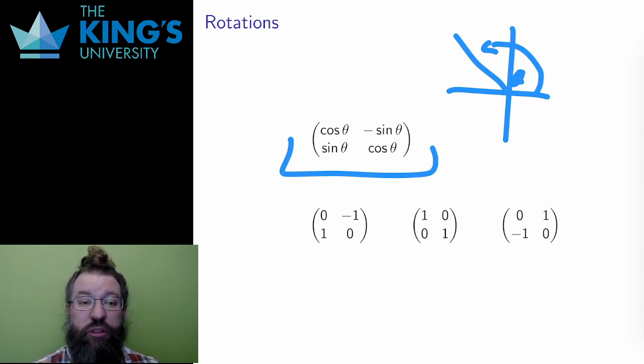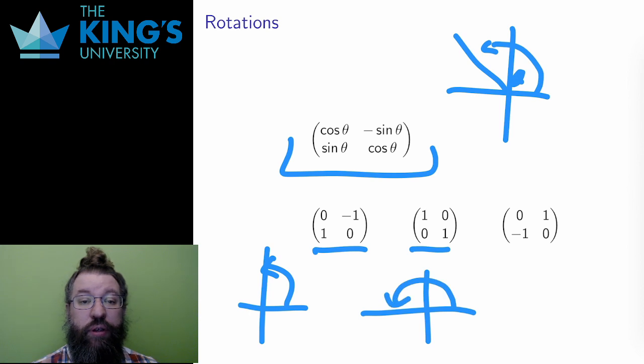Let me consider some special values. If theta is π/2, that's a quarter turn, then cosine of π/2 is 0 and sine of π/2 is 1, so the matrix becomes (0, -1, 1, 0). This is a quarter turn. Likewise, by calculating sine and cosine of π, this matrix is the half turn. And by calculating sine and cosine of 3π/2, this is the matrix of the three-quarters turn. In the activities, I'll ask you to apply these matrices to a bunch of vectors to verify that they actually do what I am saying that they do.